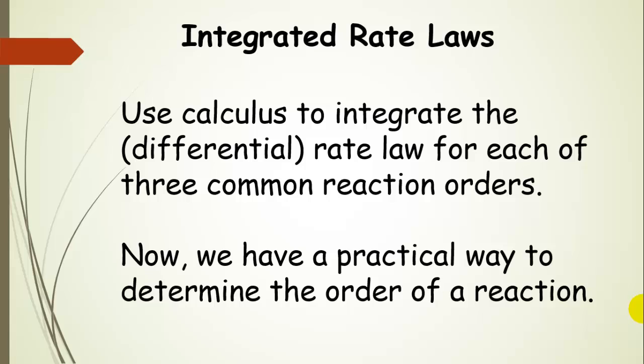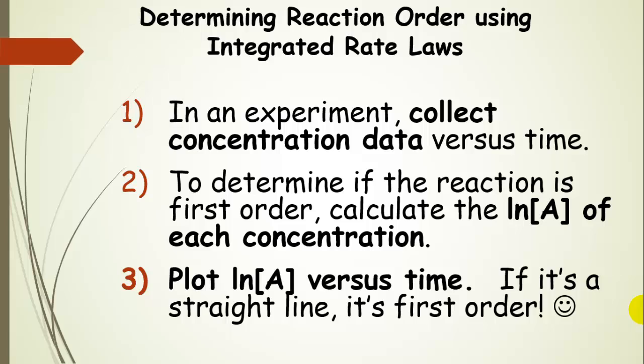After we integrate the rate law and get the integrated rate equation, we have a practical way to determine the order of a reaction. We are going to run an experiment and collect concentration data versus time — measuring the concentration of the reactant at time intervals. For a first order integrated rate law, we're going to calculate the natural log of the concentration measured at each time point. Then we're going to plot that natural log of A versus time, and if it yields a straight line, then the reaction is first order.